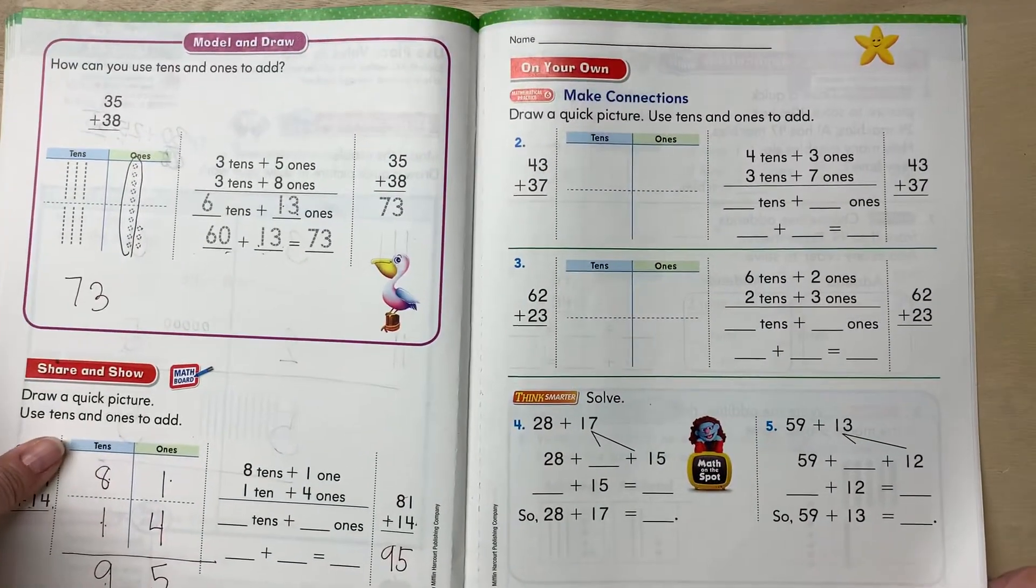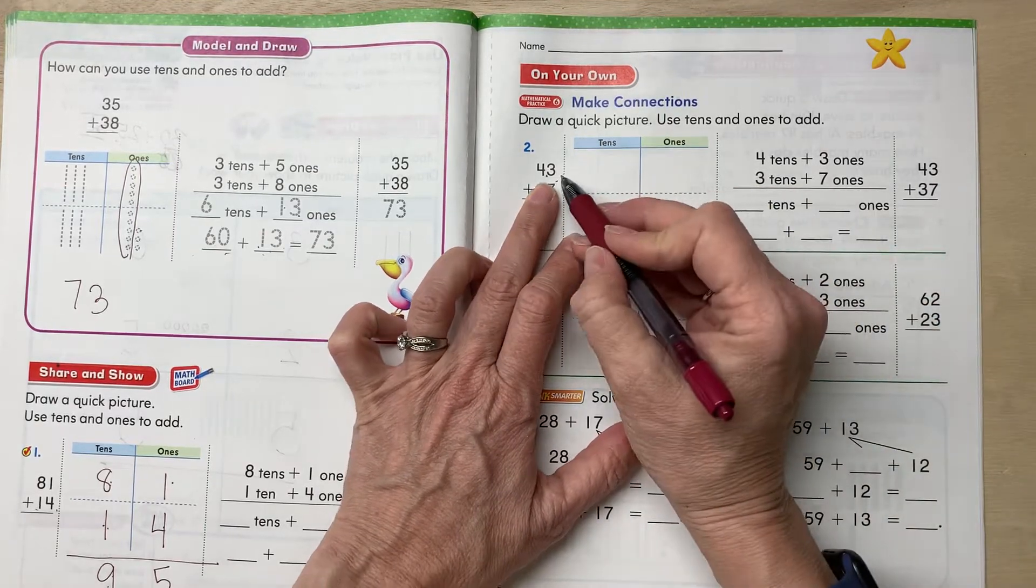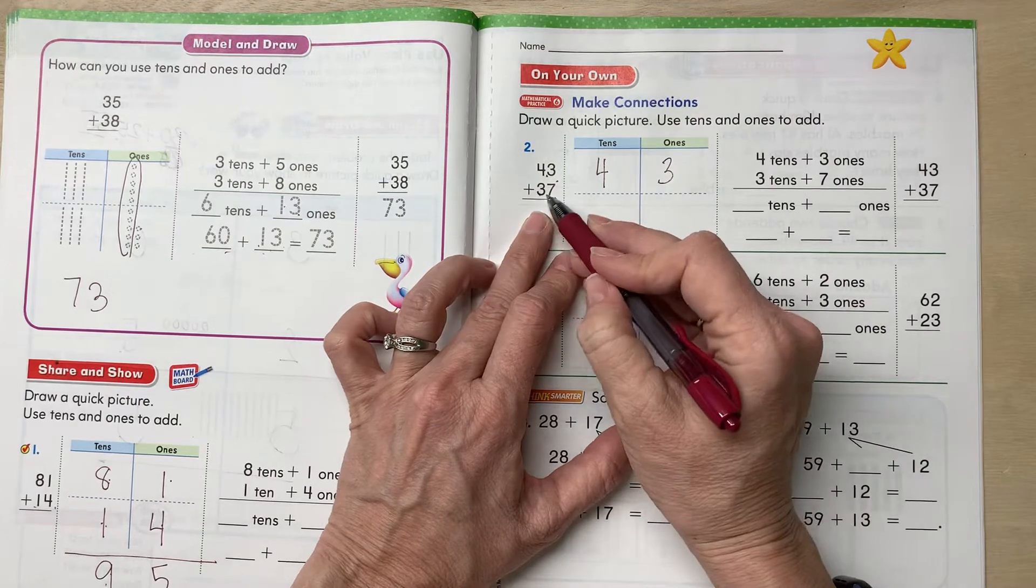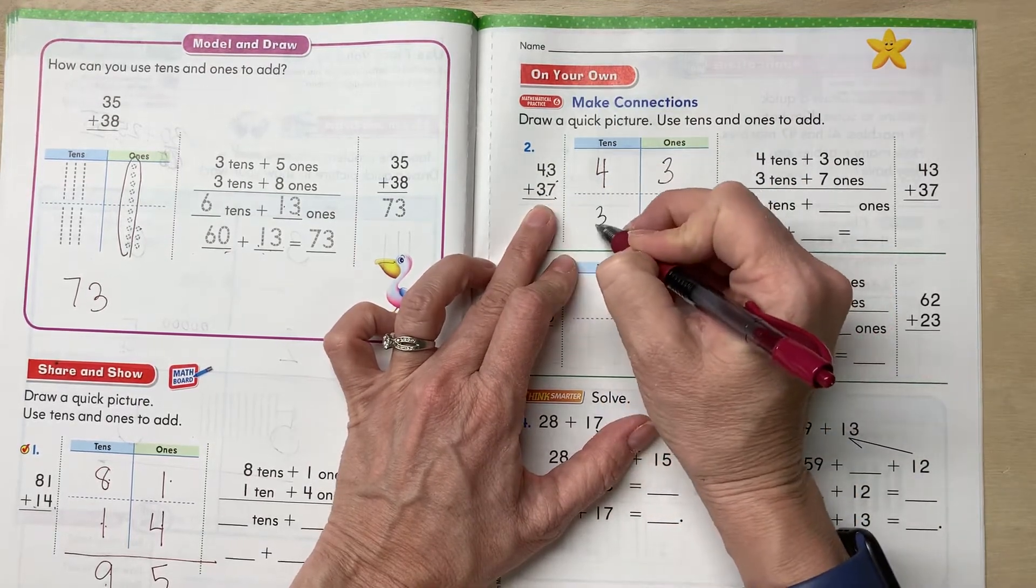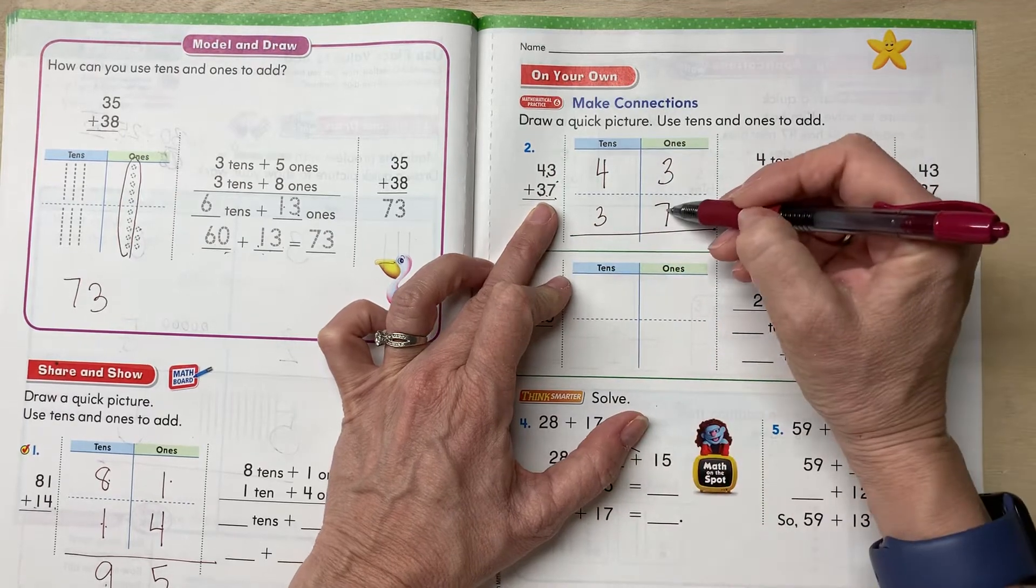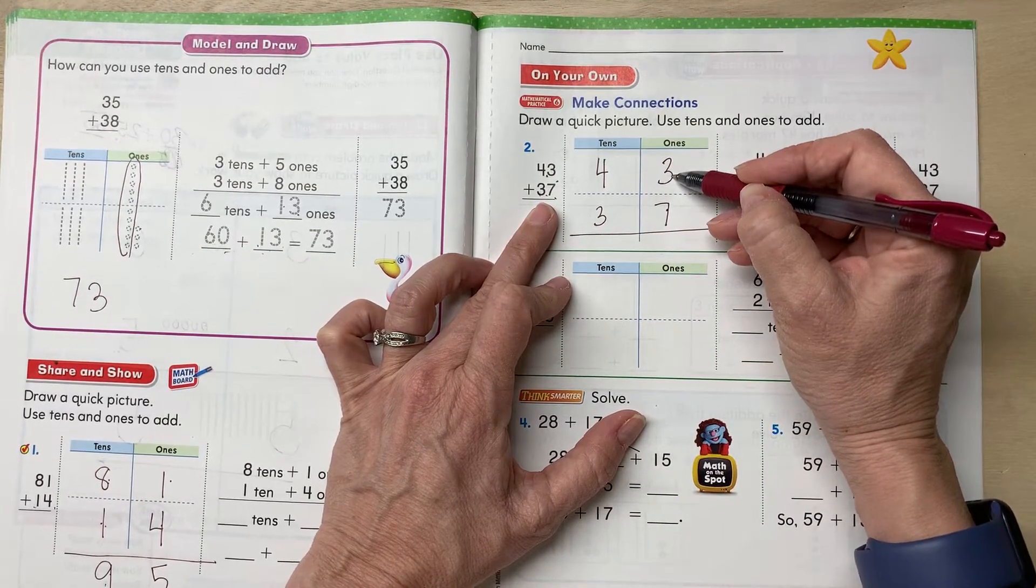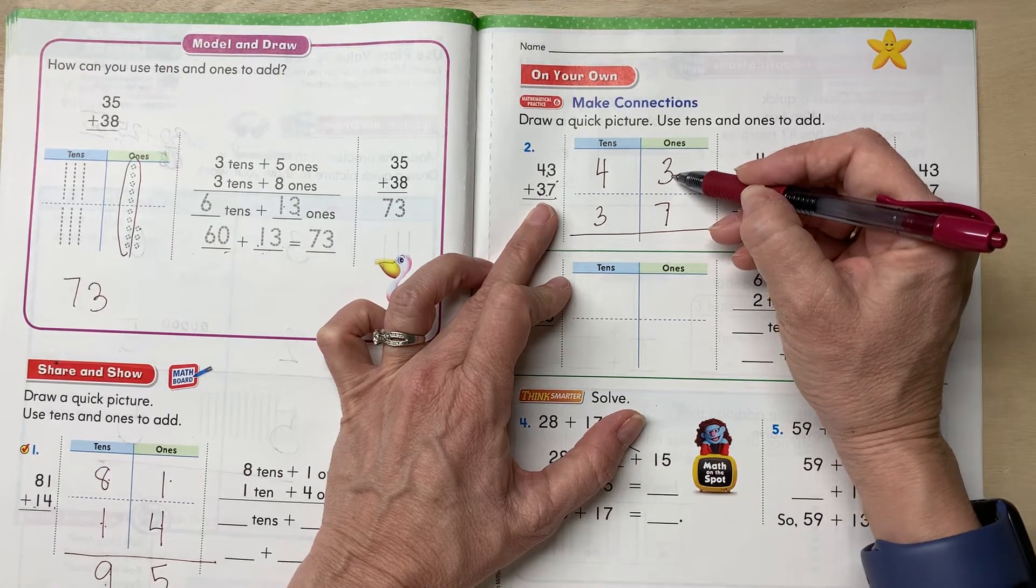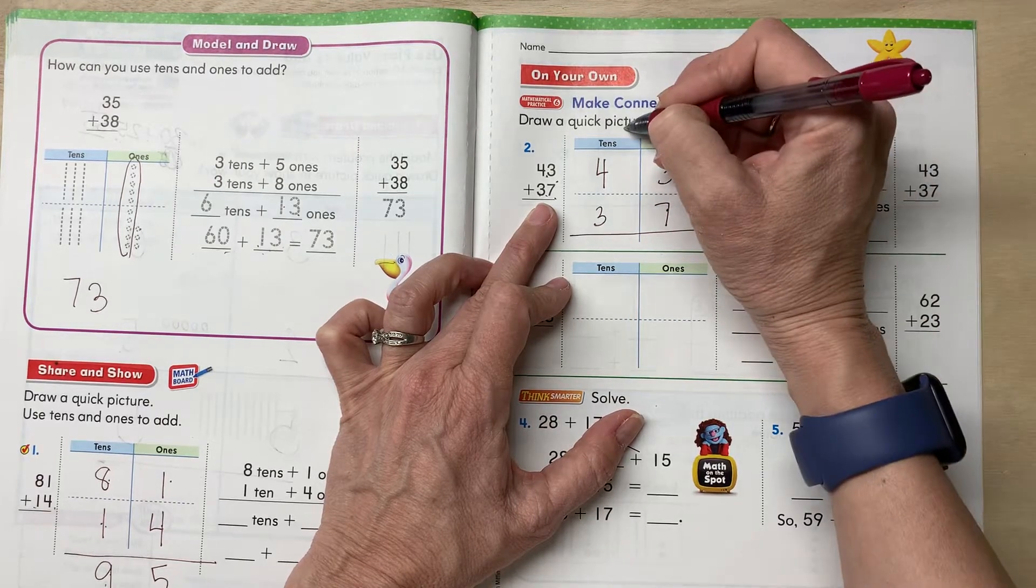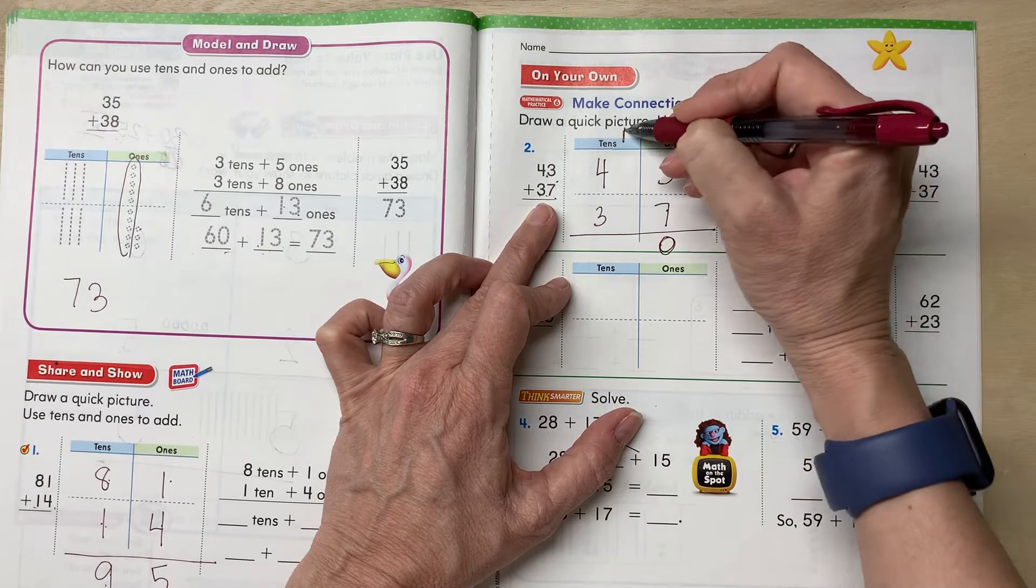All right, let's do some more. We have 43 and 37. So start with 43, four tens and three ones, and then go 37, which is three tens and seven ones. All right, let's add them up. So seven plus three is ten. So we have a new ten, don't we? So if we have a new ten, that new ten is gonna go over here. I'm gonna put it up here. So I have zero ones and one ten.